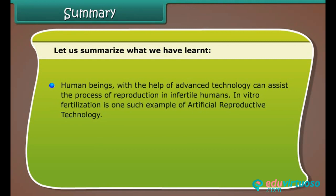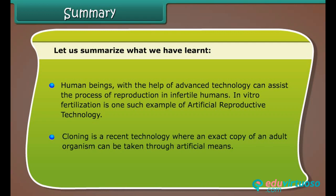With the help of advanced technology, human beings can assist the process of reproduction in infertile humans. In vitro fertilization is one such example of artificial reproductive technology. Cloning is a recent technology where an exact copy of an adult organism can be created through artificial means.